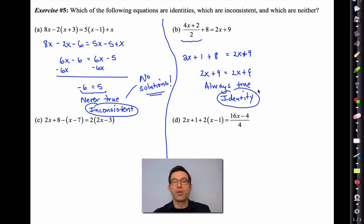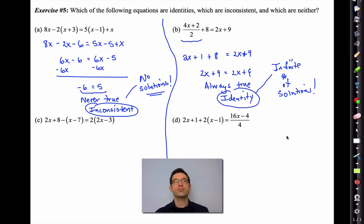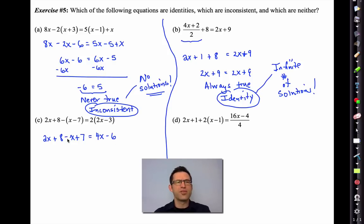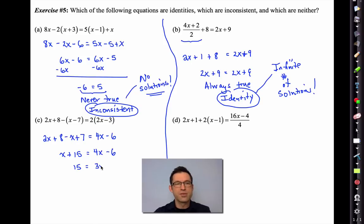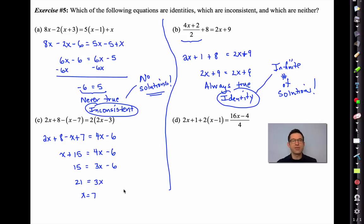For letter C, distributing negative 1 gives -x + 7. Combining: 2x - x = x + 15 on the left, 4x - 6 on the right. Solving this normally gives x = 7. So this is neither — it's neither inconsistent nor an identity because there's only one value of x that solves the equation. It's a normal equation.